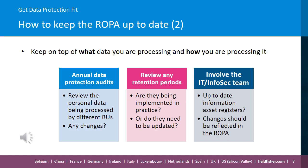To do this, you could distribute questionnaires to different business units and talk to staff across the organisation to gather information on your processing activities. You could also review internal policies and procedures as well as contracts and other data processing agreements to gather information on areas such as retention, security and data sharing. Any changes to your data processing activities should be documented in the ROPA.